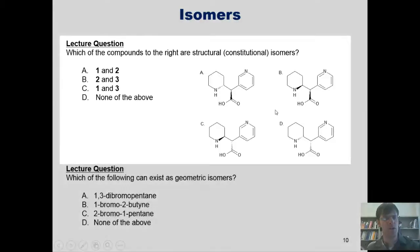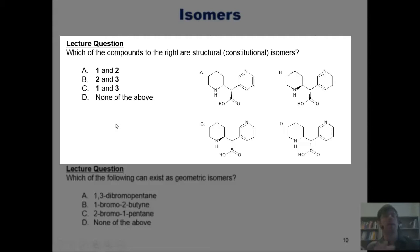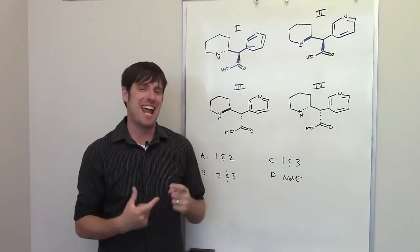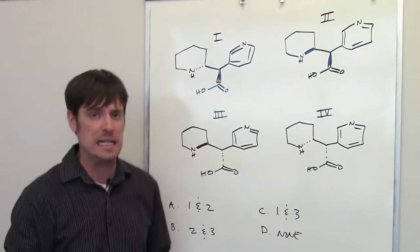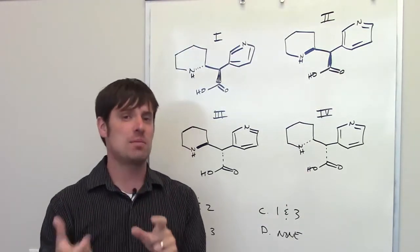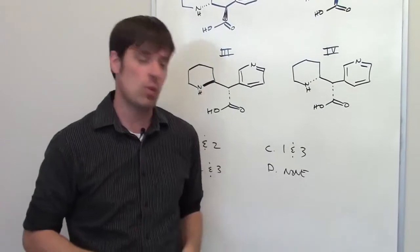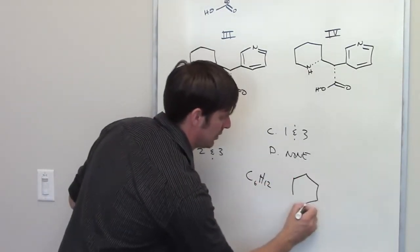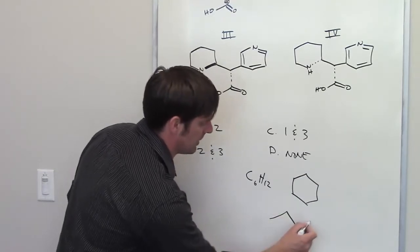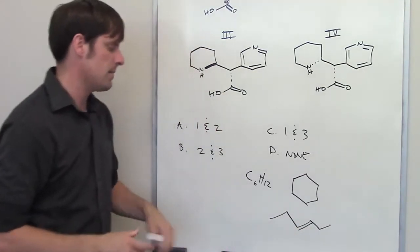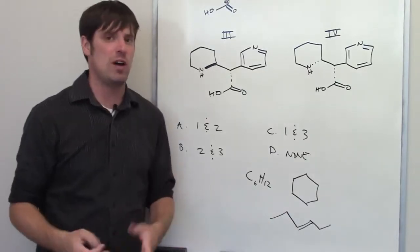In this next question we're asked which of the compounds shown are structural or constitutional isomers. The correct answer is D, none of the above. Constitutional isomers are two or more different molecules that have the exact same molecular formula but are bonded together in different ways. For example, C₆H₁₂ is the formula for cyclohexane, but it's also the formula for other molecules with different bonding patterns.